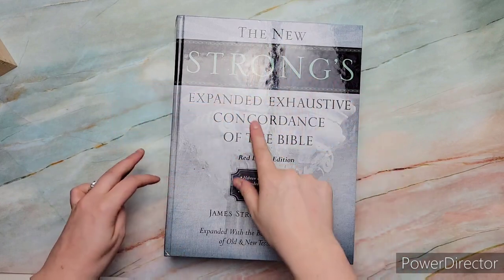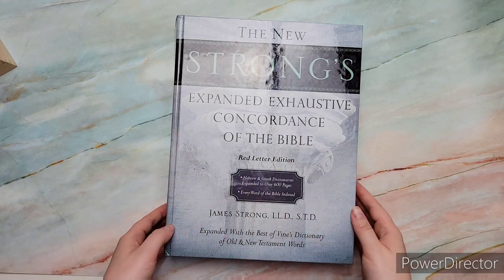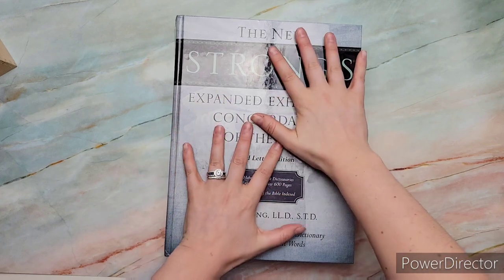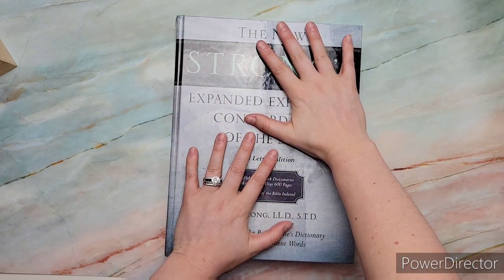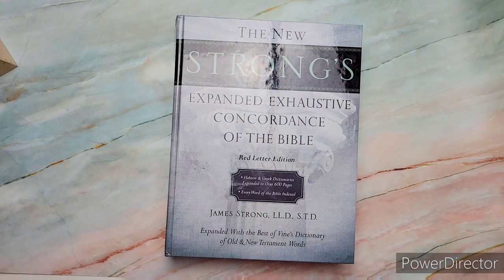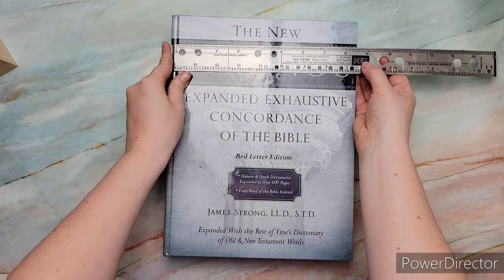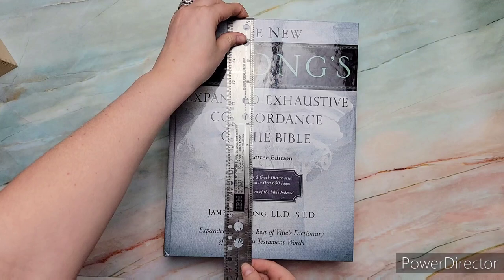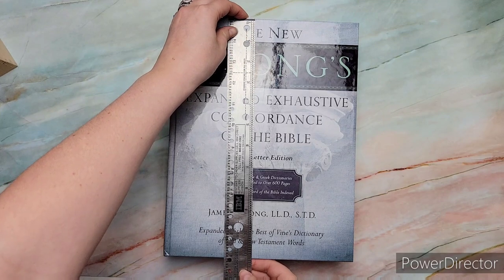So this is the New Strong's Extended Exhaustive Concordance of the Bible, Red Letter Edition. It has the Hebrew and Greek dictionaries, 600 pages everywhere to the Bible index. This was made by James Strong. It also has the Best of Vines Dictionary of the Old and New Testament. It is a big book, I think it's like 8.5 by like 11.5 or something. It is a chunker.